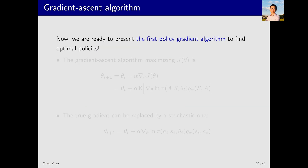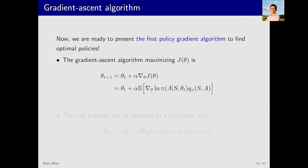The basic idea of the gradient ascent algorithm is: theta_{t+1} equals theta_t plus alpha times the gradient of J(theta), where theta is the parameter and alpha is the learning rate or step size. The gradient of the objective function, which we have already calculated, is shown here.